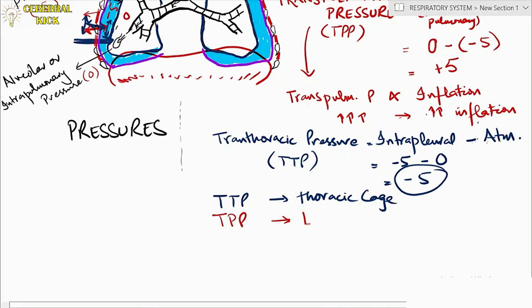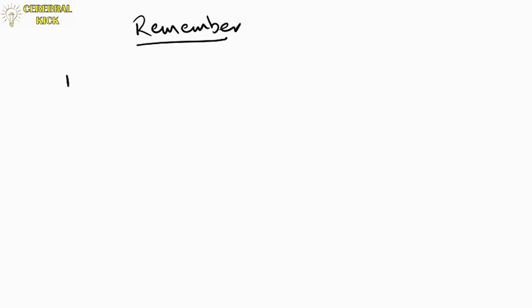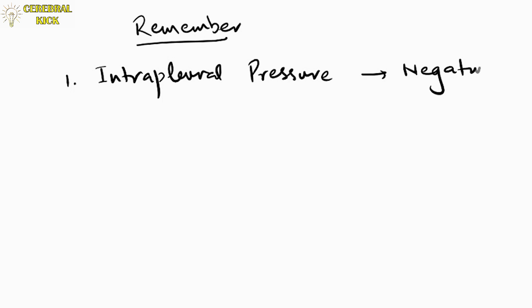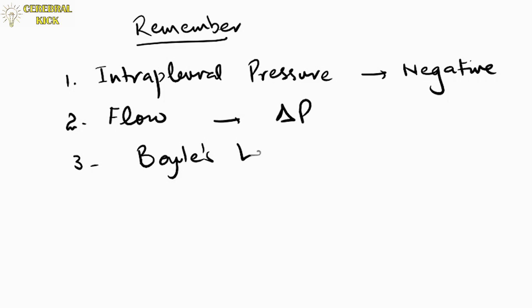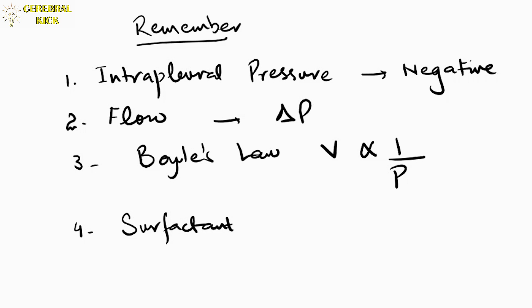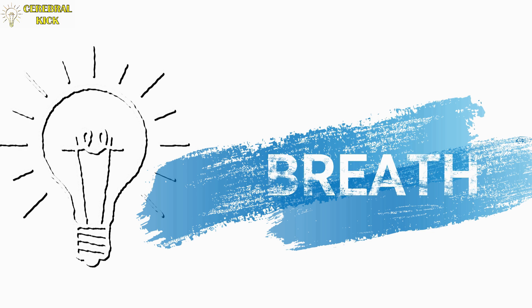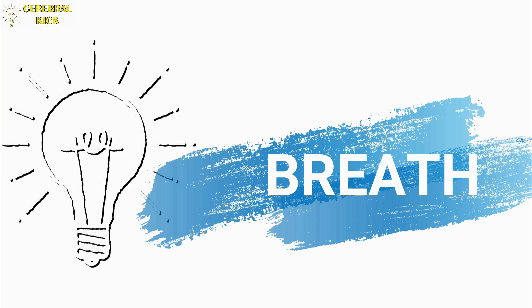Key points to remember: intrapleural pressure is negative in nature; flow is pressure-dependent and no pressure difference means no flow; Boyle's law states volume is inversely proportional to pressure, which is the principle behind the negative intrapleural pressure; and surfactant reduces surface tension.